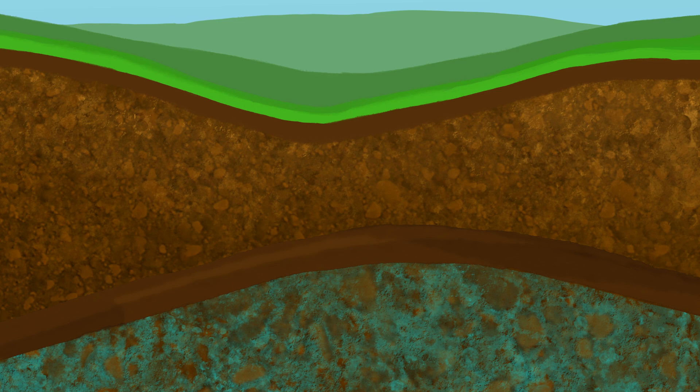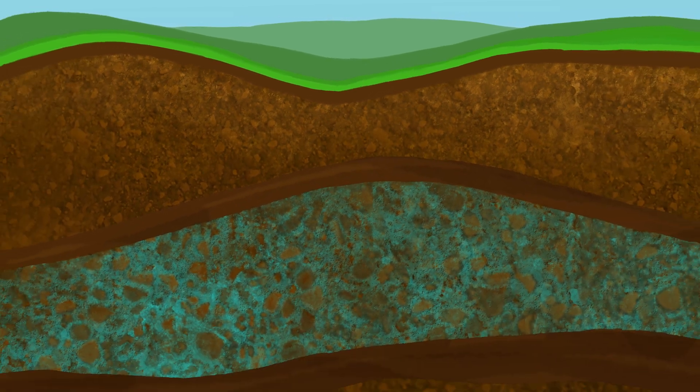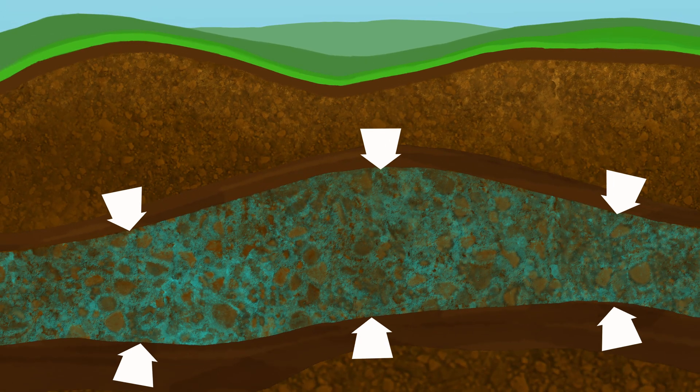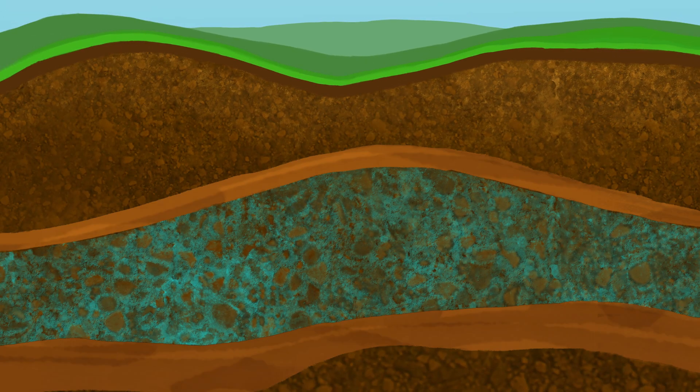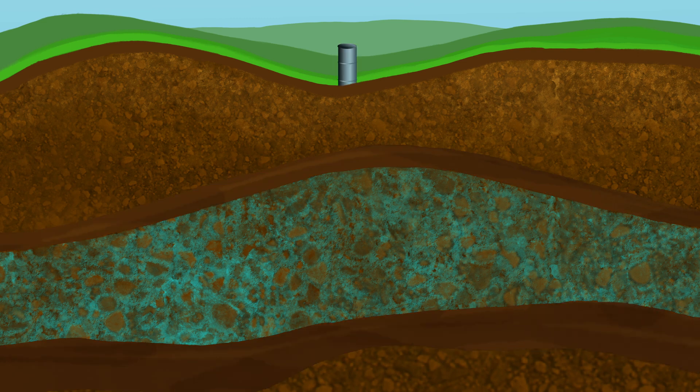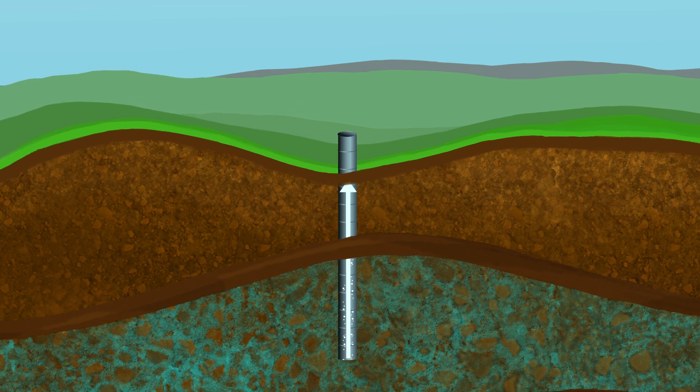Because of this confining layer, water in a confined aquifer is usually under pressure since it is caught between two confining layers. So when breached by a well, for example, water will flow upward, sometimes even to the surface. For this reason, confined aquifers are often called artesian aquifers.